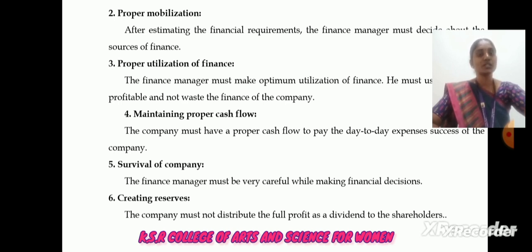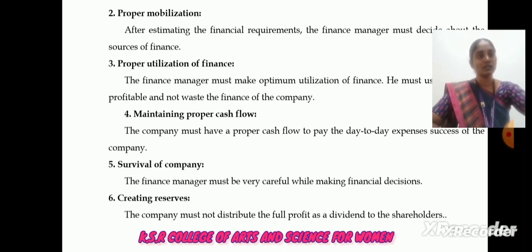The fifth additional objective is survival of the company — the financial manager must be very careful while making financial decisions, as it decides the survival of the company. The sixth is creating reserves — the company must not distribute the full profit as dividend to shareholders; the manager should consider keeping reserves for maintaining future requirements. Thank you.